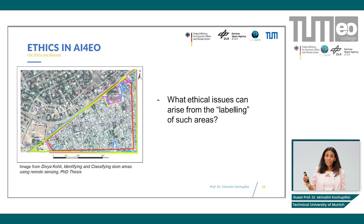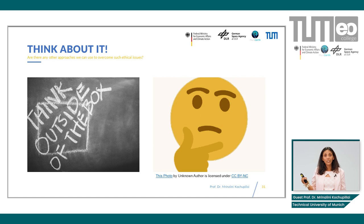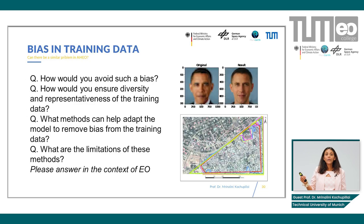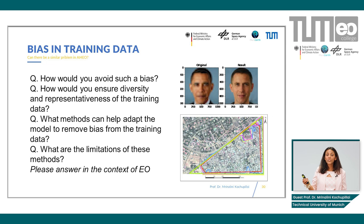Did you come up with a response based on either the consequentialist approach or the deontological approach? Can you find a solution to this issue based on these approaches? The consequentialist approach, given that we understand the consequences of labeling an area as a slum, simply says: don't label an area as a slum. The duty-based approach says: be careful about the basis on which you are labeling the area — make sure your dataset is accurate and representative enough to make a correct identification of an area as a slum or not.